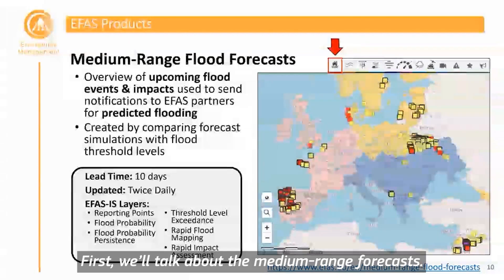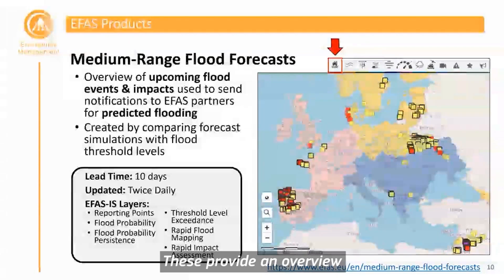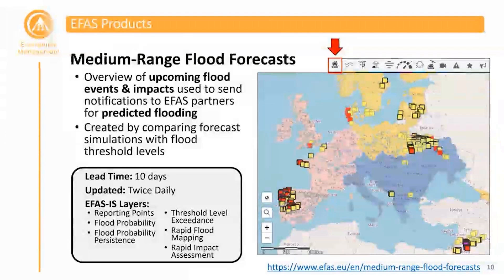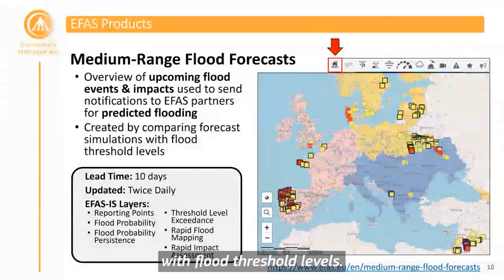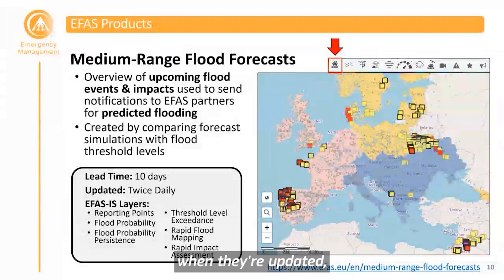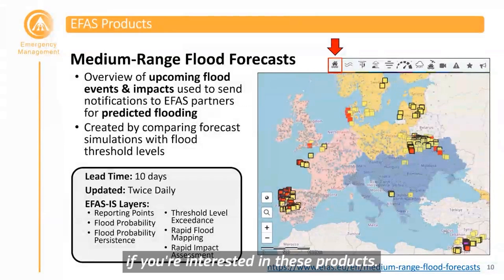The medium-range forecasts provide an overview of upcoming flood events and impacts, and are used to send notifications to EFAS partners for predicted flooding. These are created by comparing forecast simulations with flood threshold levels. For each product, there is information on the lead time, when they are updated, and the relevant EFAS IS layers.